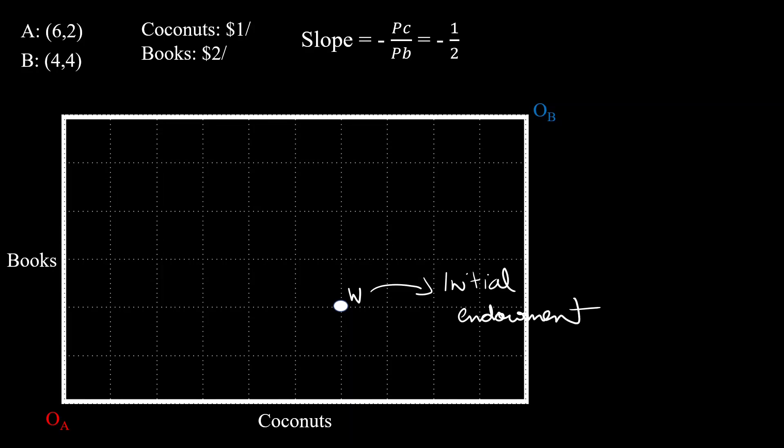We also want to know its intercepts. I'll be doing it from A's perspective and it will be the same thing if you do it from B's perspective as well. For the y-intercept, this will be our line. To be on this line, A will only have books, so he will have zero coconuts. Now, it is given that A has six coconuts. If he sells all of them, he'll get six dollars, out of which he can buy three books because they are priced at two dollars each. He already has two books, so his total will be three plus two which will be five books with zero coconuts. It will be this point.